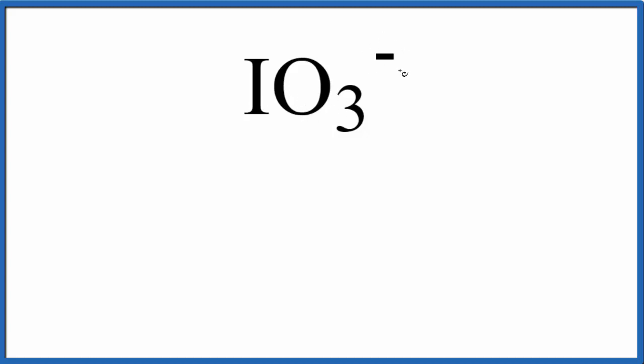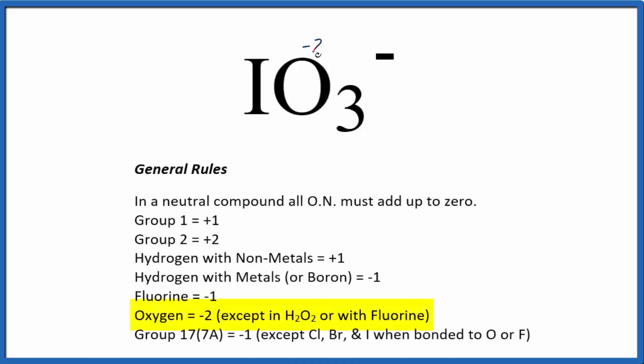We know oxygen has a negative two oxidation number, so we have three times negative two, that gives us a negative six. So some number plus negative six will give us our minus one here.